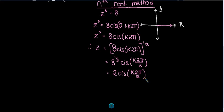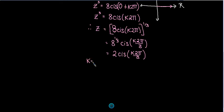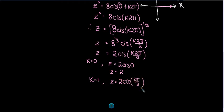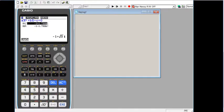Now we're going to get our three solutions. When k equals zero, we end up with two cis zero — and last time I checked, that is just two. When k equals one, we end up with z equals two cis two pi on three.